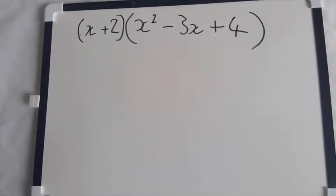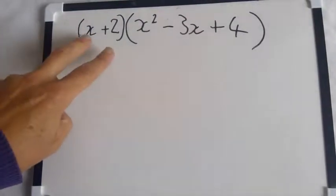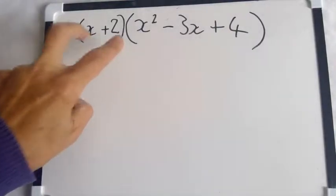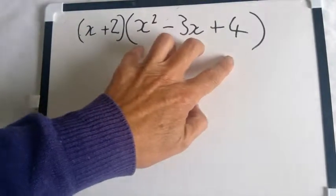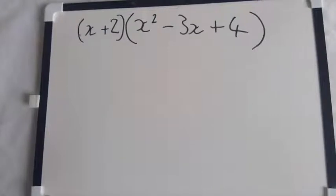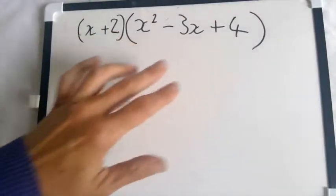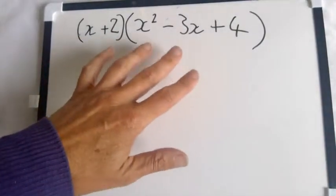Now we're going to look at a situation where we have two items in the first bracket and three items in the second bracket. We do get asked about this at National 5 level. Sometimes we just get asked when there's two and there's two, that's a bit easier, but we've got to pay a bit of attention to this.